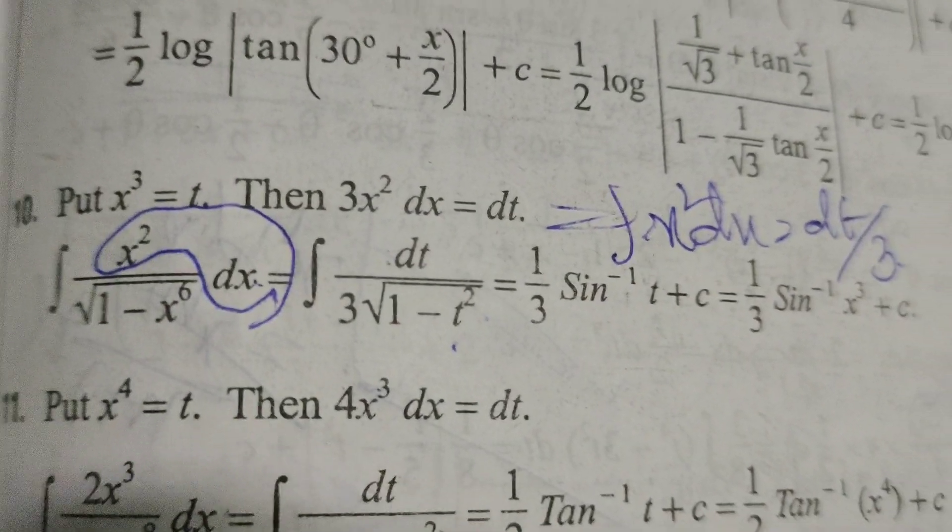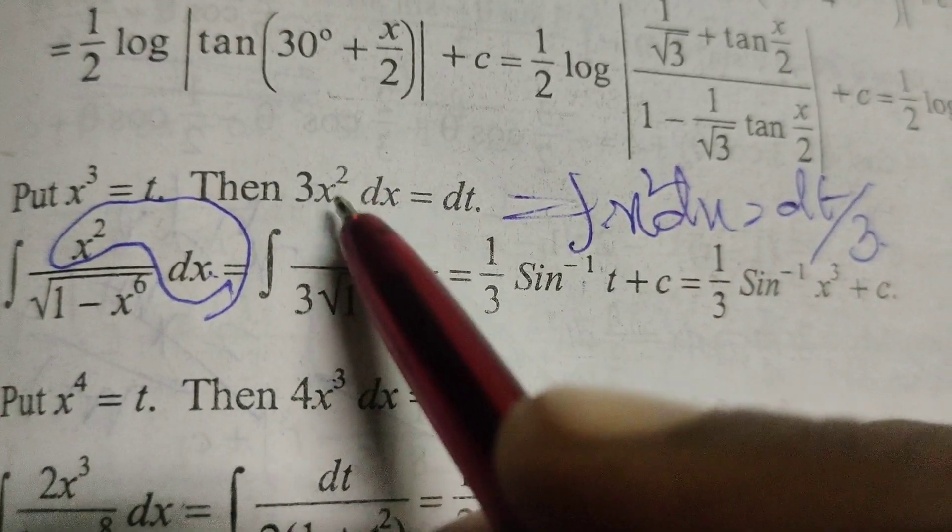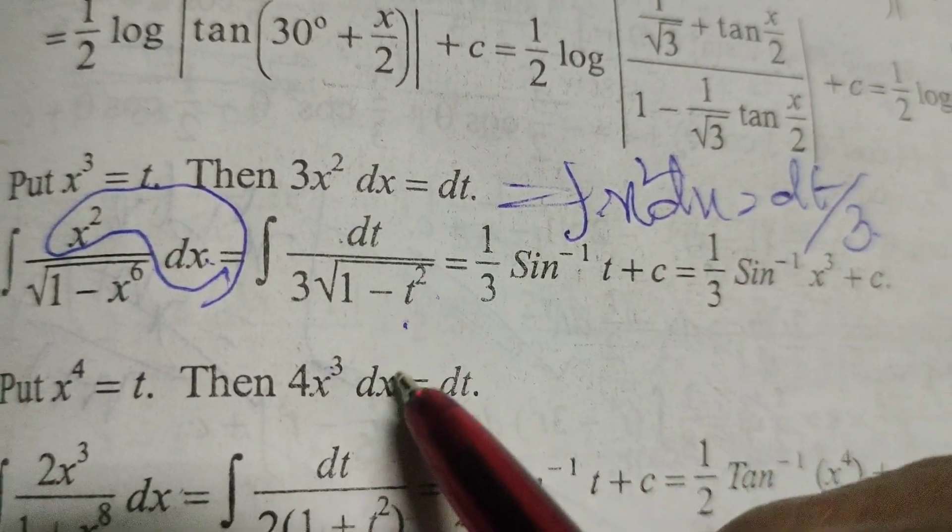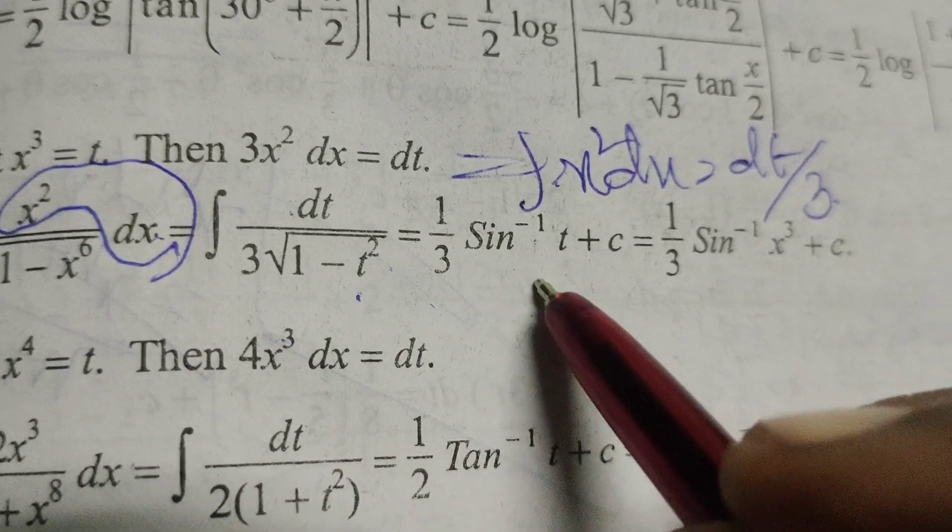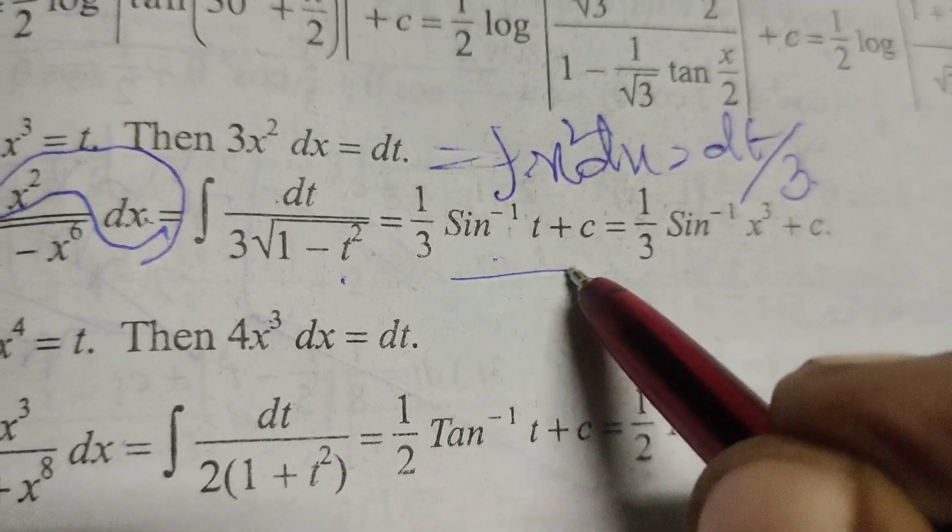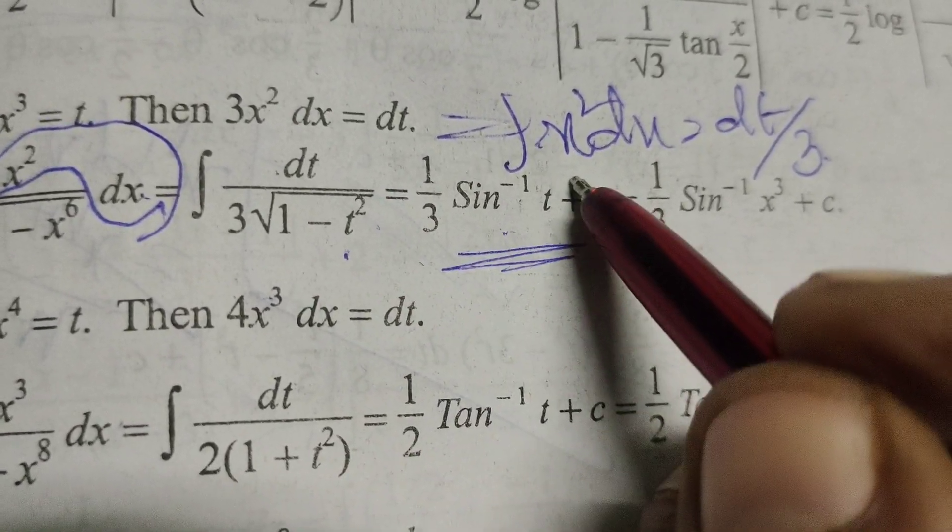Therefore 1 by 3. Here integral 1 by root of 1 minus t square means sin inverse t plus c. After integration, adding the constant.